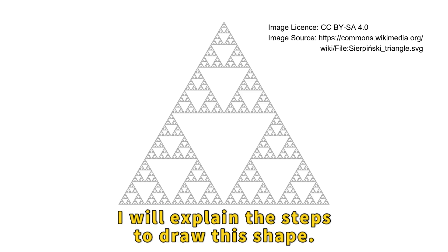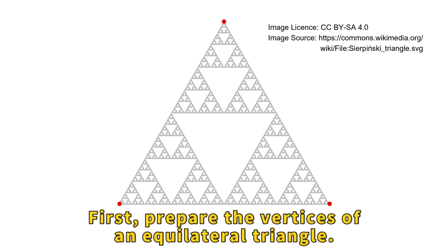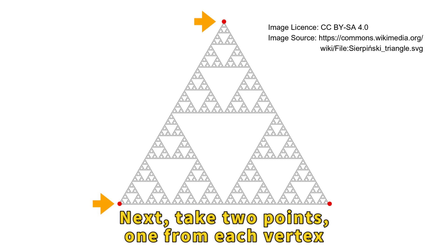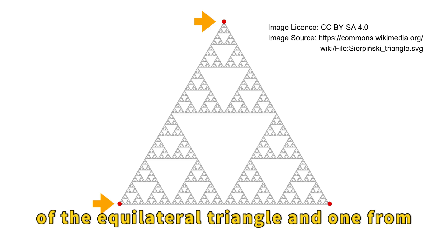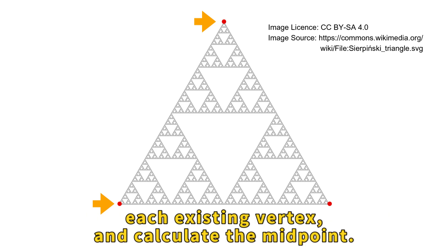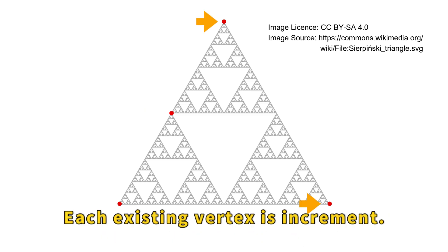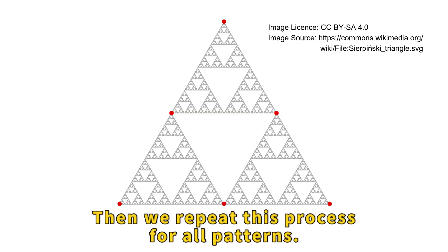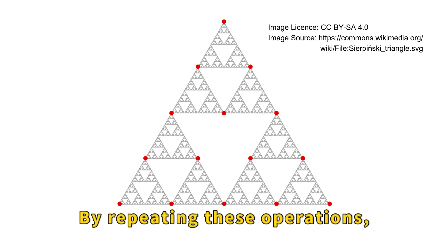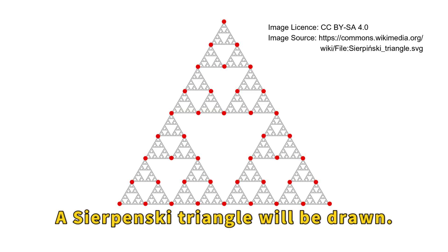I will explain the steps to draw this shape. First, prepare the vertices of an equilateral triangle. Next, take two points — one from each vertex of the equilateral triangle and one from each existing vertex — and calculate the midpoint. Each existing vertex is incremented. Then we repeat this process for all patterns. By repeating these operations, a Sierpinski Triangle will be drawn.